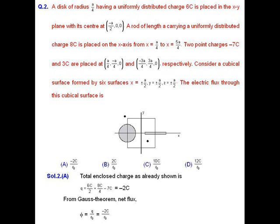MCQ question number 2: A disk of radius a/4 having a uniformly distributed charge 6C is placed in the xy-plane with its center at (-a/2, 0, 0). A rod of length a carrying a uniformly distributed charge 8C is placed on the x-axis from x = a/4 to x = 5a/4. Two point charges -7C and 3C are placed at (a/4, -a/4, 0) and (-3a/4, 3a/4, 0) respectively. Consider a cubical surface formed by six surfaces: x = ±a/2, y = ±a/2, and z = ±a/2. In this question we have to find out the electric flux passing through the cubical surface.